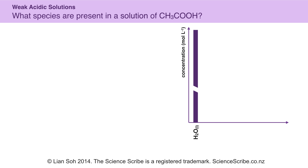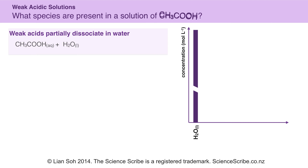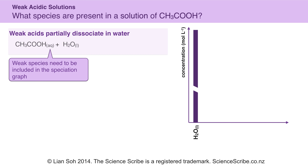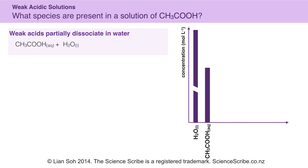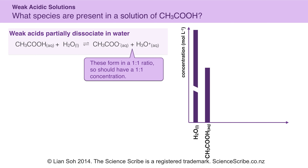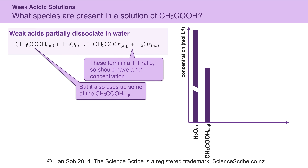What about a weak acid? The example I'm going to use is ethanoic acid, that's CH₃COOH. It's still an acid, so I write an equation for dissociation with water. I'm going to include my ethanoic acid in my speciation graph because weak acids only partially dissociate — there will always be some of that weak acid left in solution. I form one ethanoate ion and one hydronium ion in a 1 to 1 ratio. But when I form my ethanoate and hydronium ions, I use up a little bit of my original ethanoic acid, so on my speciation graph you'll see the ethanoic acid bar shrink a little bit as it's used to make ethanoate and hydronium ions.